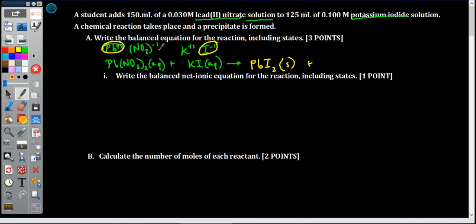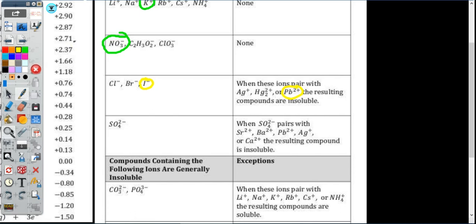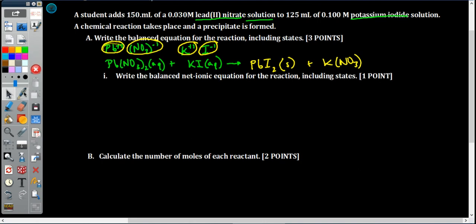The other product: we pair the positive potassium with the negative nitrate. That comes together in a one-to-one ratio to give KNO₃. Anything with potassium or nitrate is soluble, so this last product is aqueous. Now we balance: nitrates and iodides are unbalanced, so add a coefficient of 2 in front of KI and 2 in front of KNO₃. Coefficients are 1, 2, 1, 2. States: aqueous, aqueous, solid, aqueous.